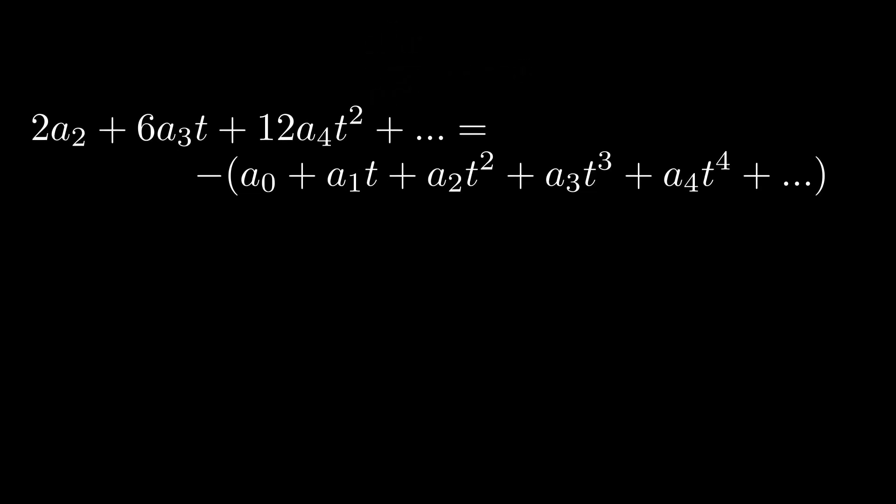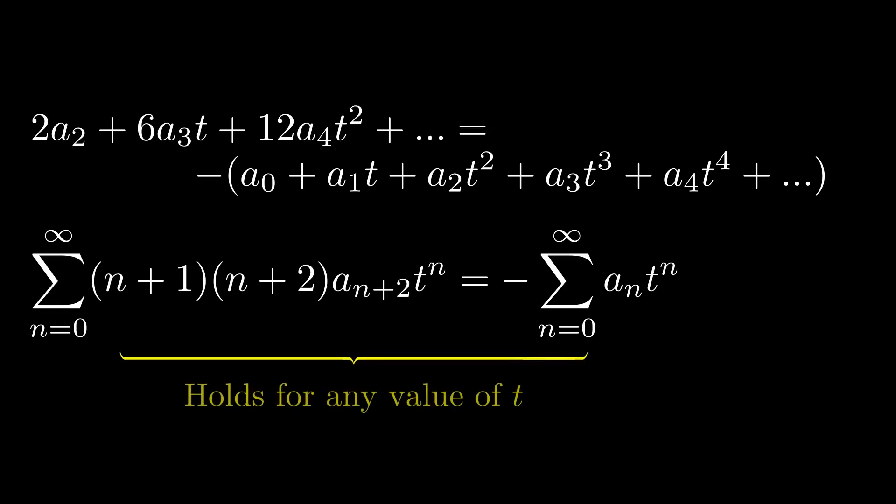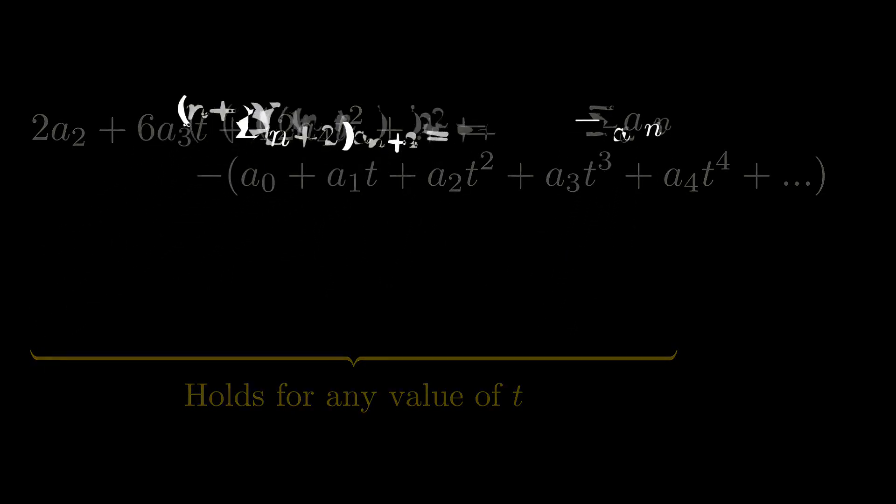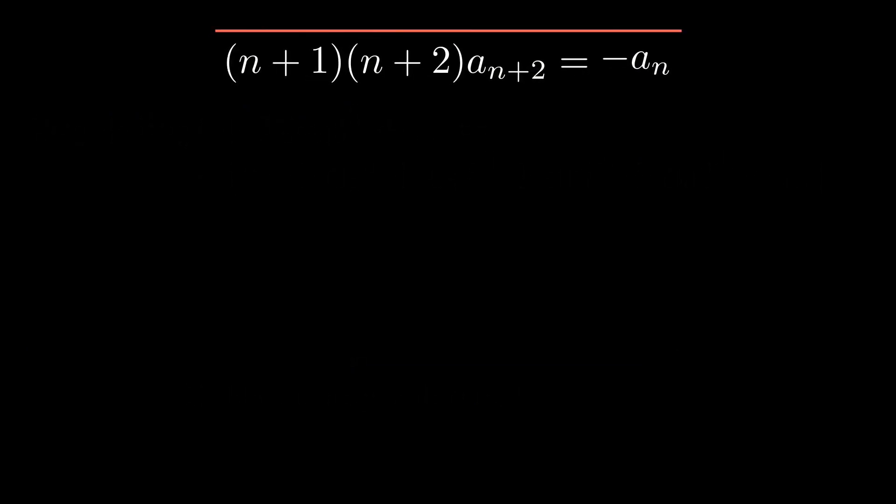On the left side, we have a series from n equal to 0 to infinity with coefficients n plus 1 times n plus 2 times a_n+2 and t raised to the power n. The right side is our simple power series just with a negative sign. Now, if this is a general solution, this should satisfy for any value of t. Therefore, the coefficient of every term must be equal. This keeps a relation that each coefficient a_n of the power series should satisfy.